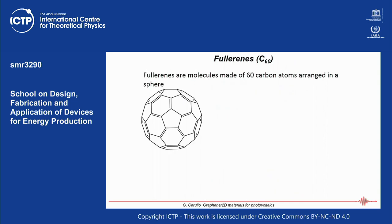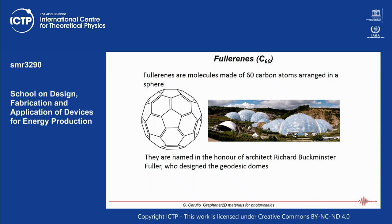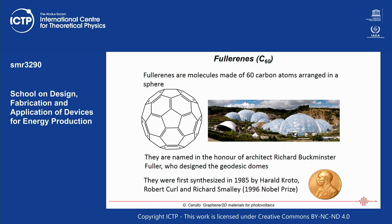Fullerenes are molecules made of 60 carbon atoms arranged in a sphere. The name honors architect Richard Buckminster Fuller, who designed geodesic domes that recall the fullerene molecule. Fullerenes were first synthesized in 1985 by Curl, Kroto, and Smalley, who received the Nobel Prize in 1996.